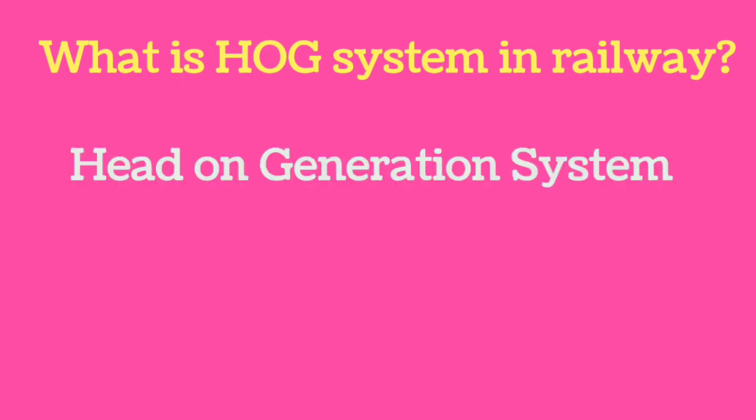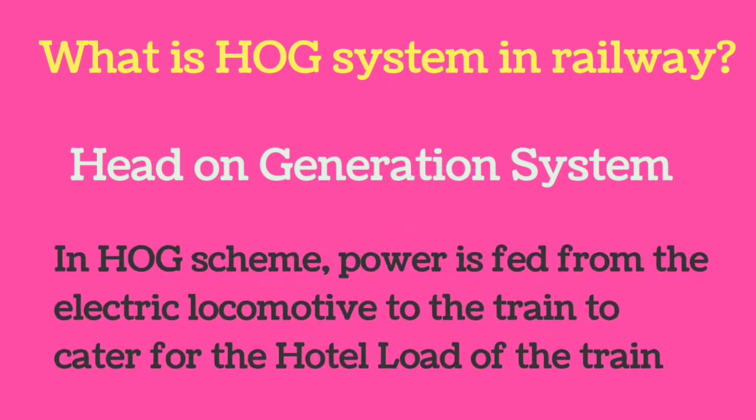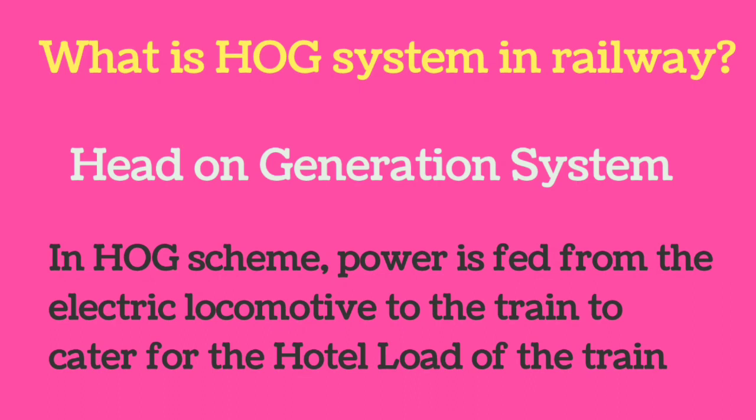HOG stands for Head On Generation. In the HOG scheme, power is fed from the electric locomotive to the train to cater for the hotel load of the train. This system helps save diesel.